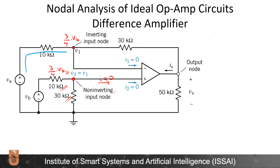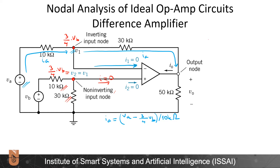I will find an expression for current IA flowing from this node. Since no current flows into the op-amp input, all of IA flows through the 30 kΩ resistor to the output node. So: IA = (VA − (3/4)VB) / 10 kΩ (Equation 1), and IA = ((3/4)VB − V0) / 30 kΩ (Equation 2). Setting them equal gives: 3VA − (9/4)VB = (3/4)VB − V0.